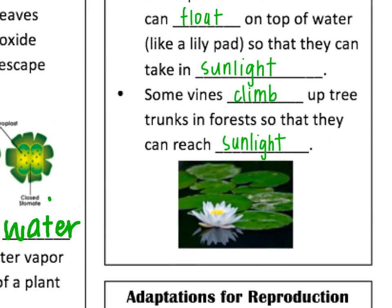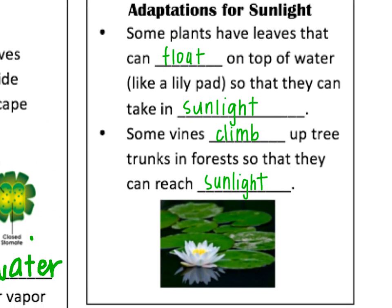Now let's look at some adaptations for sunlight — mainly for plants in places like the rainforest where sunlight is scarce because it's blocked by other plants. If you are a plant that lives in the water, you need to be able to stay on the surface. Some plants have leaves that can float like a lily pad, with little air pockets underneath so they can float on top of the water and take in sunlight. And like we saw in the rainforest, some vines can climb up tree trunks to reach the top of the canopy and get to that sunlight.